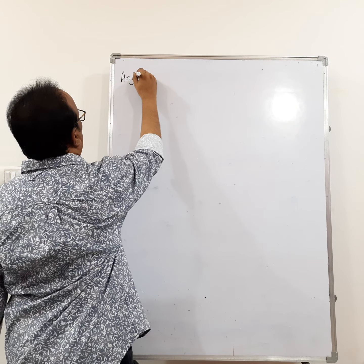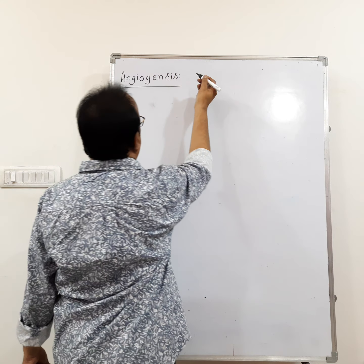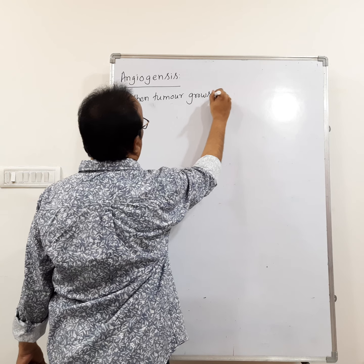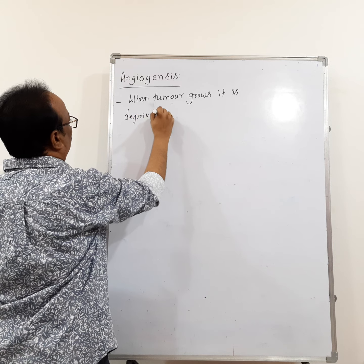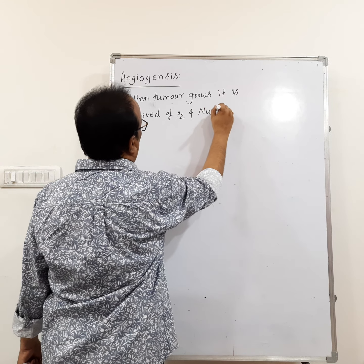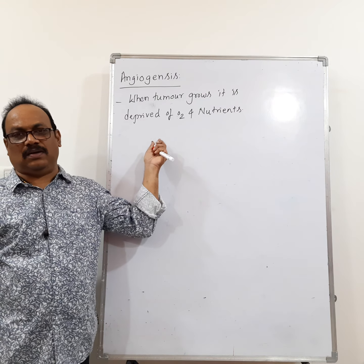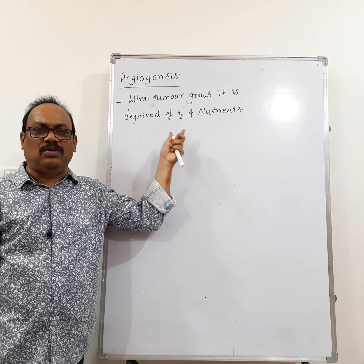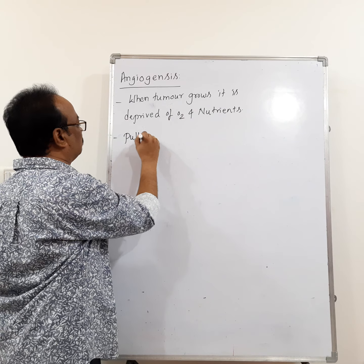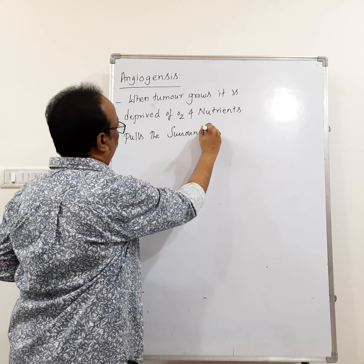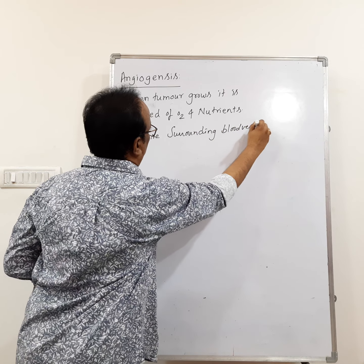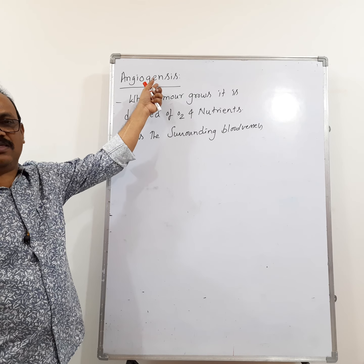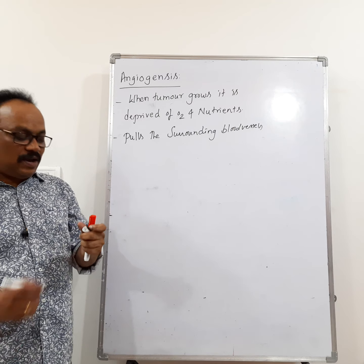Another feature is angiogenesis. When a tumor grows, it is deprived of oxygen and nutrients. To obtain more oxygen and nutrients, the tumor pulls surrounding blood vessels toward itself. This process of attracting new blood vessels is called angiogenesis.